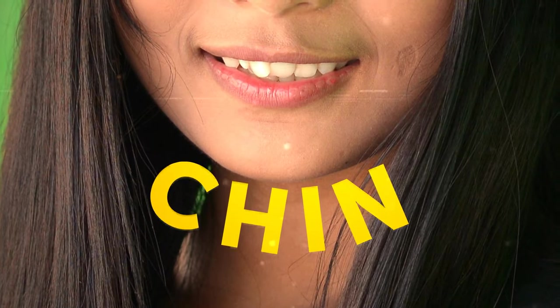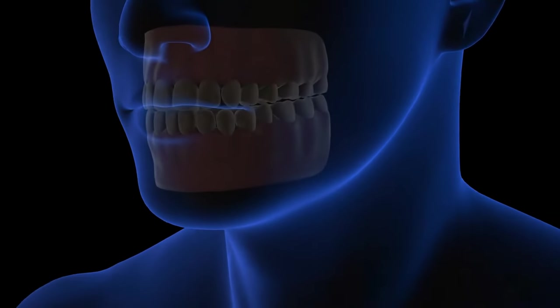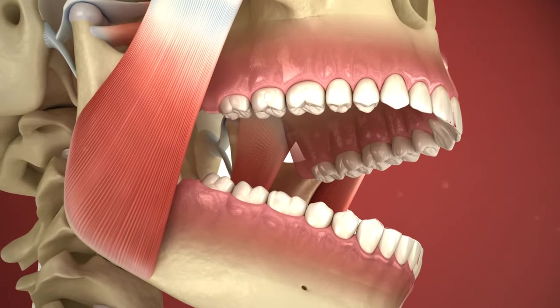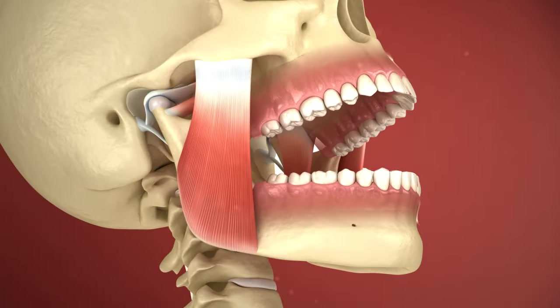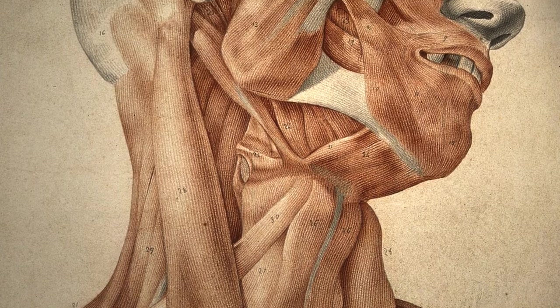We are the only species on this planet to have a chin. There's still some debate about this subject in the scientific community, but one of the reasons why seems to be to make our jaws stronger. As humans have continued to evolve, their teeth and the muscles in their jaws got smaller and smaller. So, they needed something to help with increased jaw resistance.